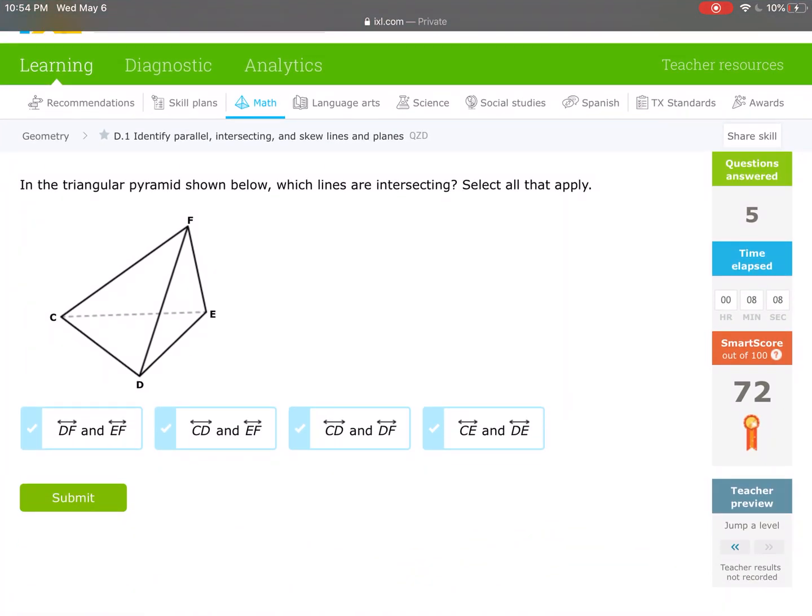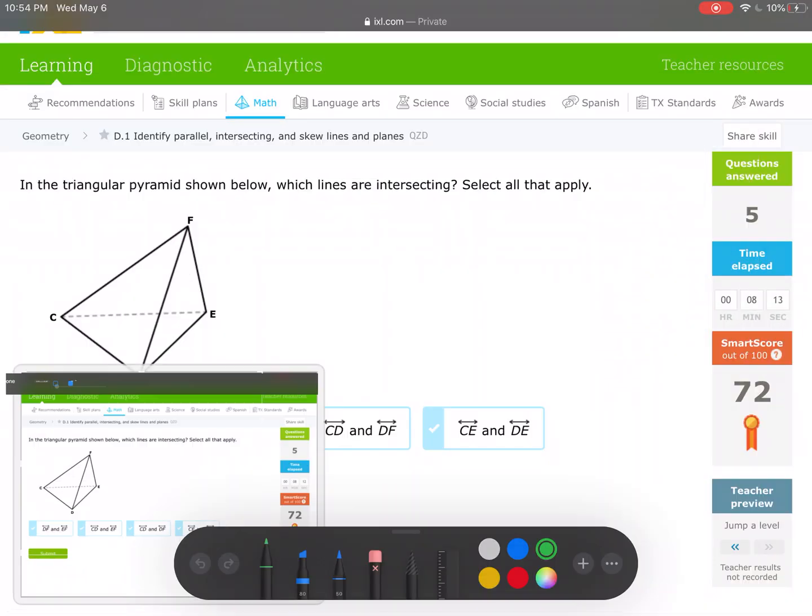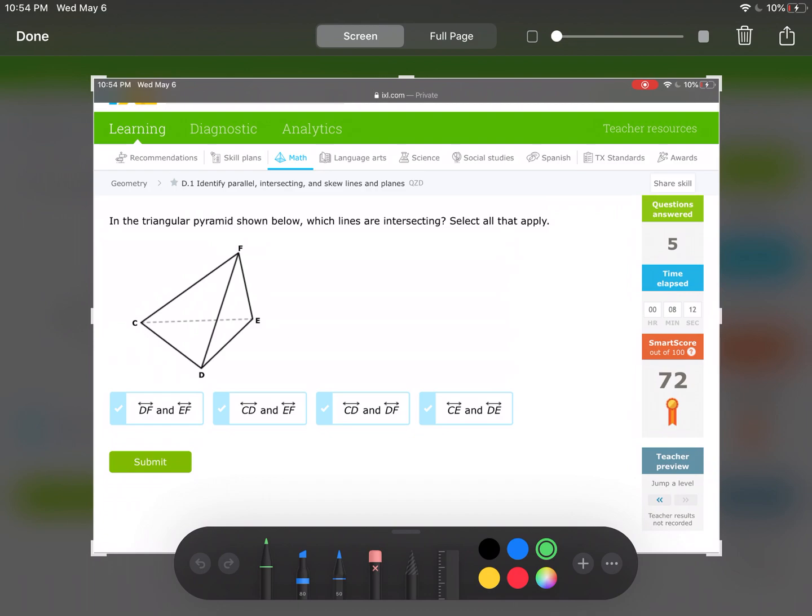Which lines are intersecting? I'll do this one because we haven't seen this type of example. DF and EF. So DF, EF. Do those intersect? Yes, they do.